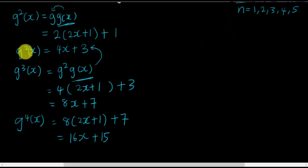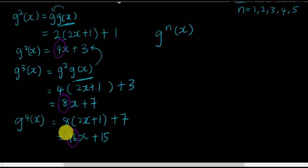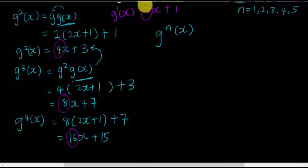So now I have: g¹(x) = 2x + 1, g²(x) = 4x + 3, g³(x) = 8x + 7, g⁴(x) = 16x + 15. If I want to find g^n(x), I must be able to see the pattern. Summarizing: the coefficients of x are 2, 4, 8, 16 — and these are 2, 4, 8, 16.